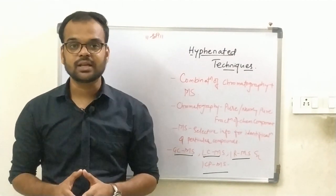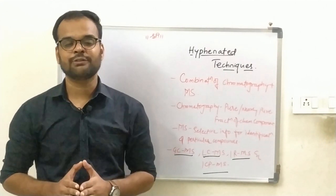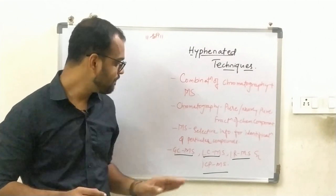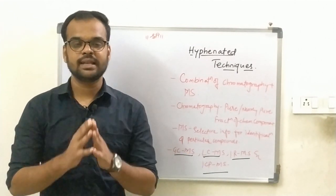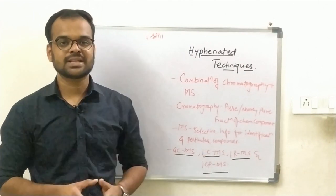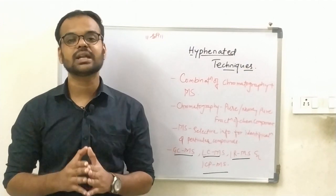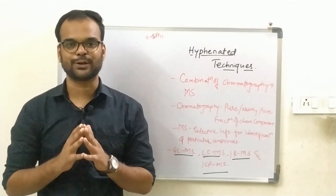This hyphenated technique includes GC-MS that is gas chromatography coupled with mass spectrometry, LC-MS that is liquid chromatography coupled with mass spectrometry, IR-MS that is infrared mass spectrometry, and ICP-MS that is inductively coupled plasma mass spectrometry.